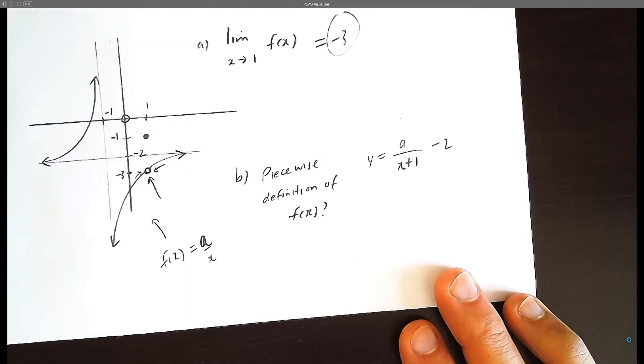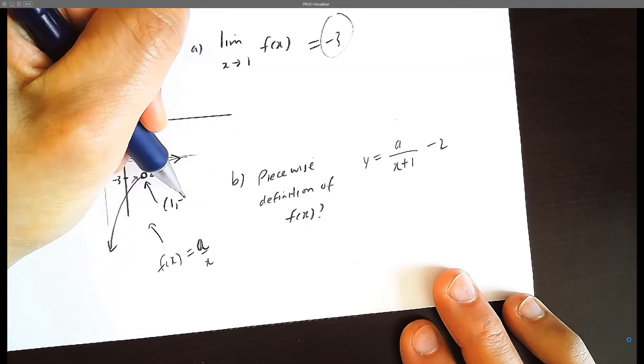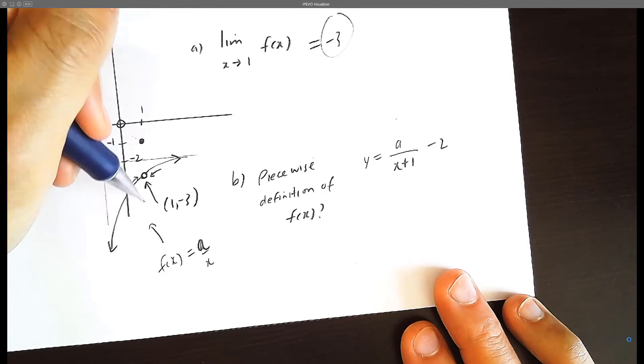It's going to be this one here, the hole, this little hollow hole, which is going to be 1 comma negative 3. 1 comma negative 3 is supposed to theoretically go through this curve.